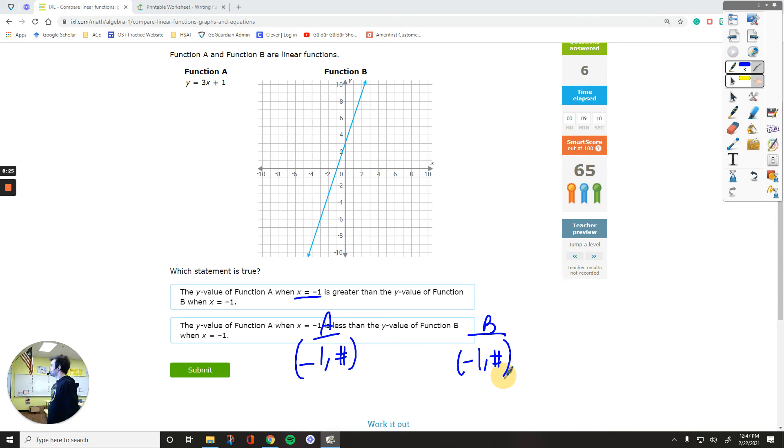For the graph, for function B, if x equals negative 1, negative 1 is right here. And it's already on the graph. I was trying to find a question where the point does not lie on the graph. But I don't think I can. So let's just stick to this. So that point is negative 1, 0.